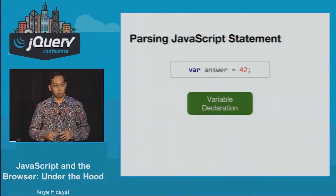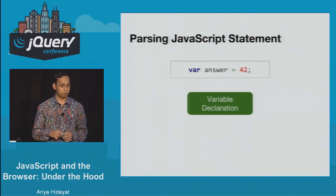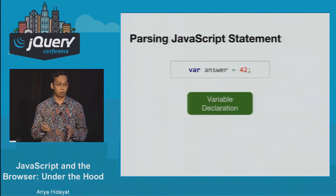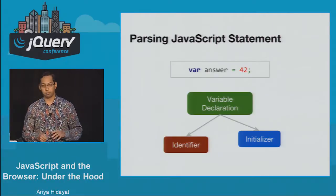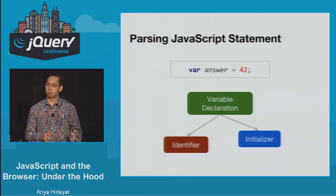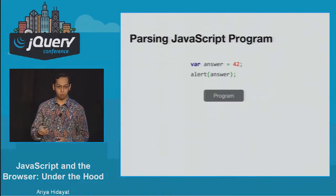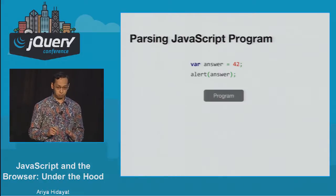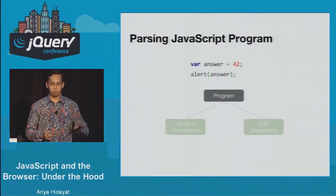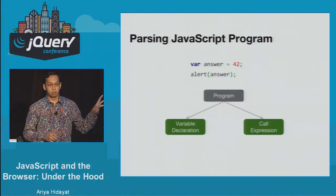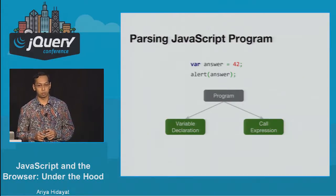Once we get the tokens, we construct something called the syntax tree. Starting from the root: 'var answer = 42' is a variable declaration. That syntax node needs additional information — what variable to declare, which is the identifier, and what value to assign, called the initializer. For a full program with two lines, we have 'program' as the top-level node, with the variable declaration on the left and an additional call expression for 'alert(answer)'. Each syntax node maps to each line of code.